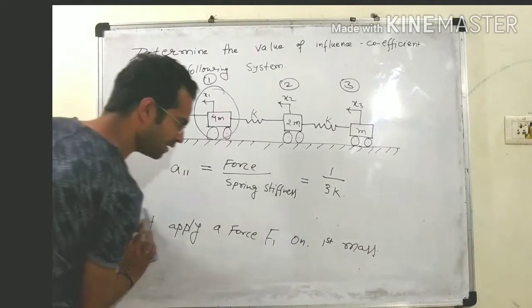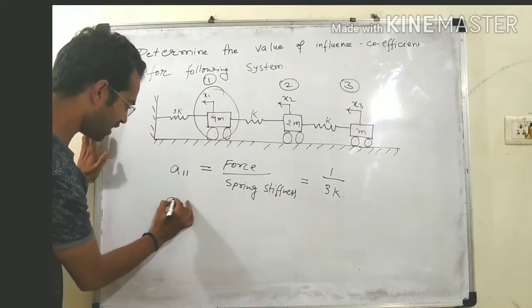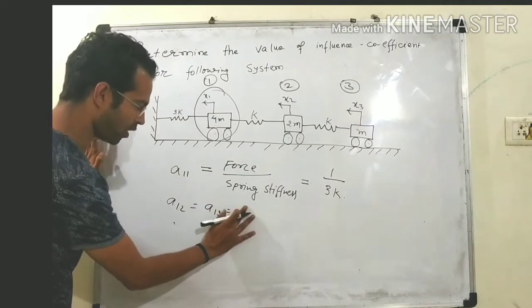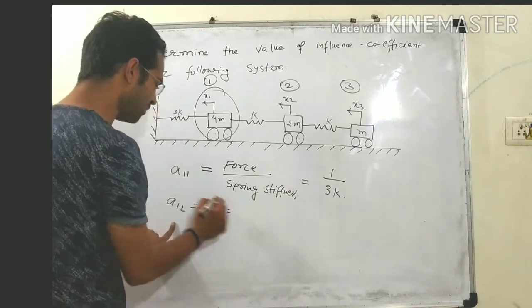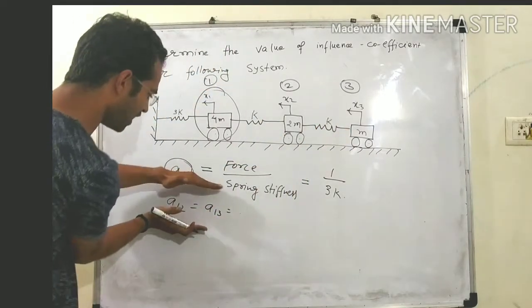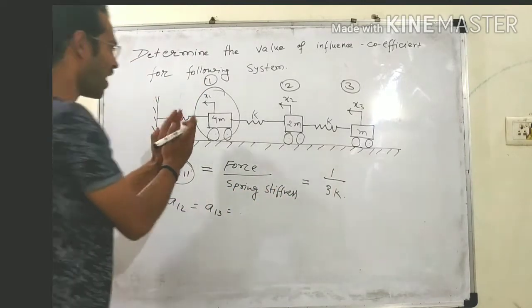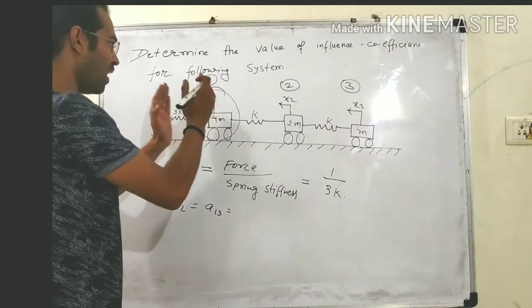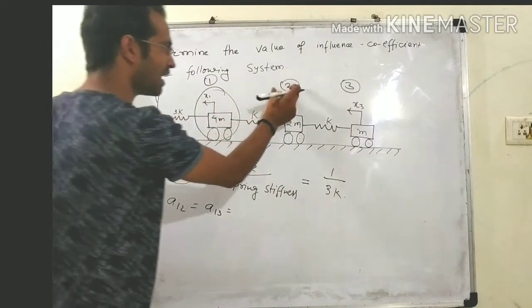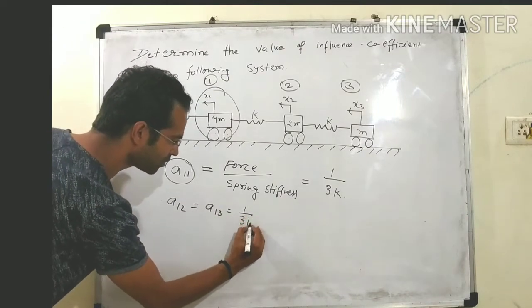A11 equals 1/3K. We know that A11 will be the same as A12 and A13. So wherever there is a first mass effect, the value will be equal to A11. A11 is 1 upon 3K. A12 and A13 represent the effect on the second and third masses due to the first mass. So their value will again be 1 upon 3K.